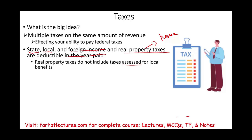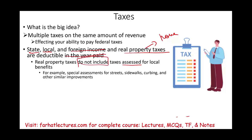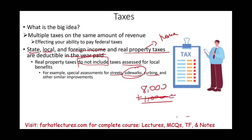When it comes to real property taxes, special assessments — taxes assessed for local benefits — are not included. For example, special assessments for streets, sidewalks, curbing, and other similar improvements are not deductible. What happens sometimes is this: your real property taxes are $8,000, then the city fixes the sidewalk, and for that year they will add $1,000 — they call it a special assessment. That additional $1,000, because it's for the special assessment, is not deductible.